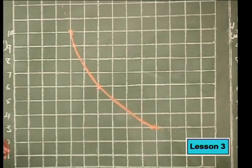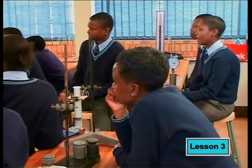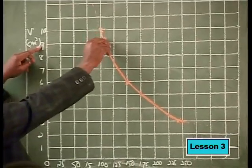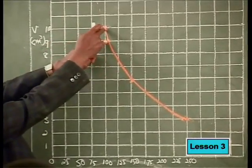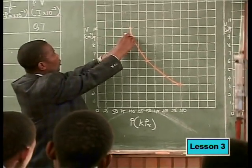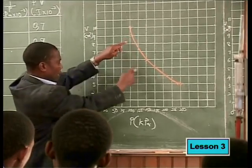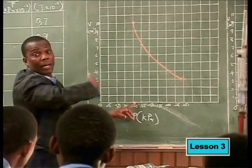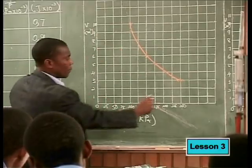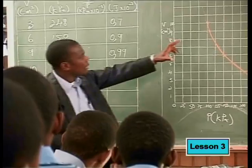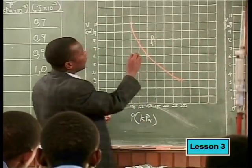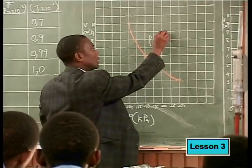That gives the shape of a graph — what do you call that? A hyperbola. Now, what is important is that as the volume decreases, what happens to the pressure? You look at this point: the volume was 10 and the pressure was 100. The volume decreased from 10 to 9, and the corresponding pressure was more than 100 — it increased. As you go through this, you realize that as volume decreases, pressure increases.